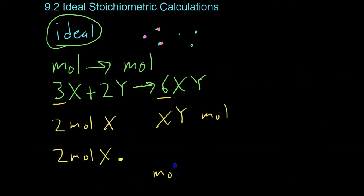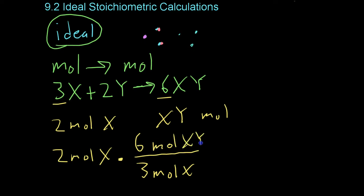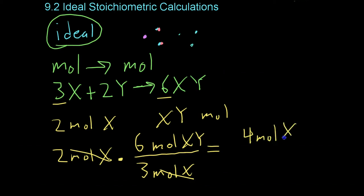So, the moles of X go on the bottom. And there's 3 moles of X for every 6 moles of XY. And then, when you solve, after canceling your units, then you get 4 moles of XY.